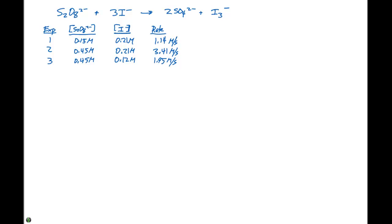Let's try another example and determine the rate law for this particular expression, where we have S₂O₈²⁻ plus 3I⁻ giving us 2SO₄²⁻ plus I₃⁻. Remember that when we write a rate law, we write it in terms of the reactants. So we're going to write rate equals K times the concentration of S₂O₈²⁻ to the X power times I⁻ to the Y power.